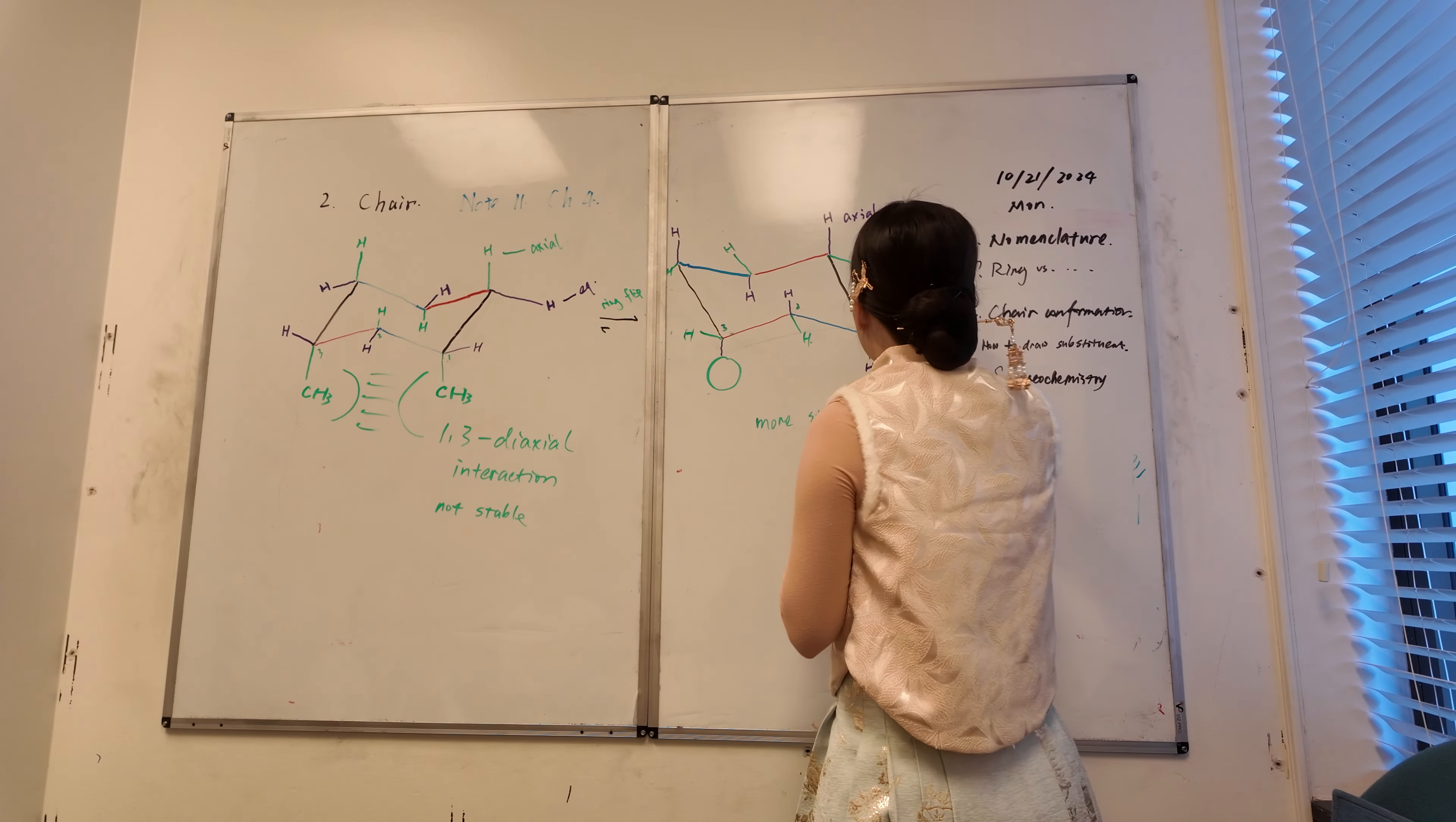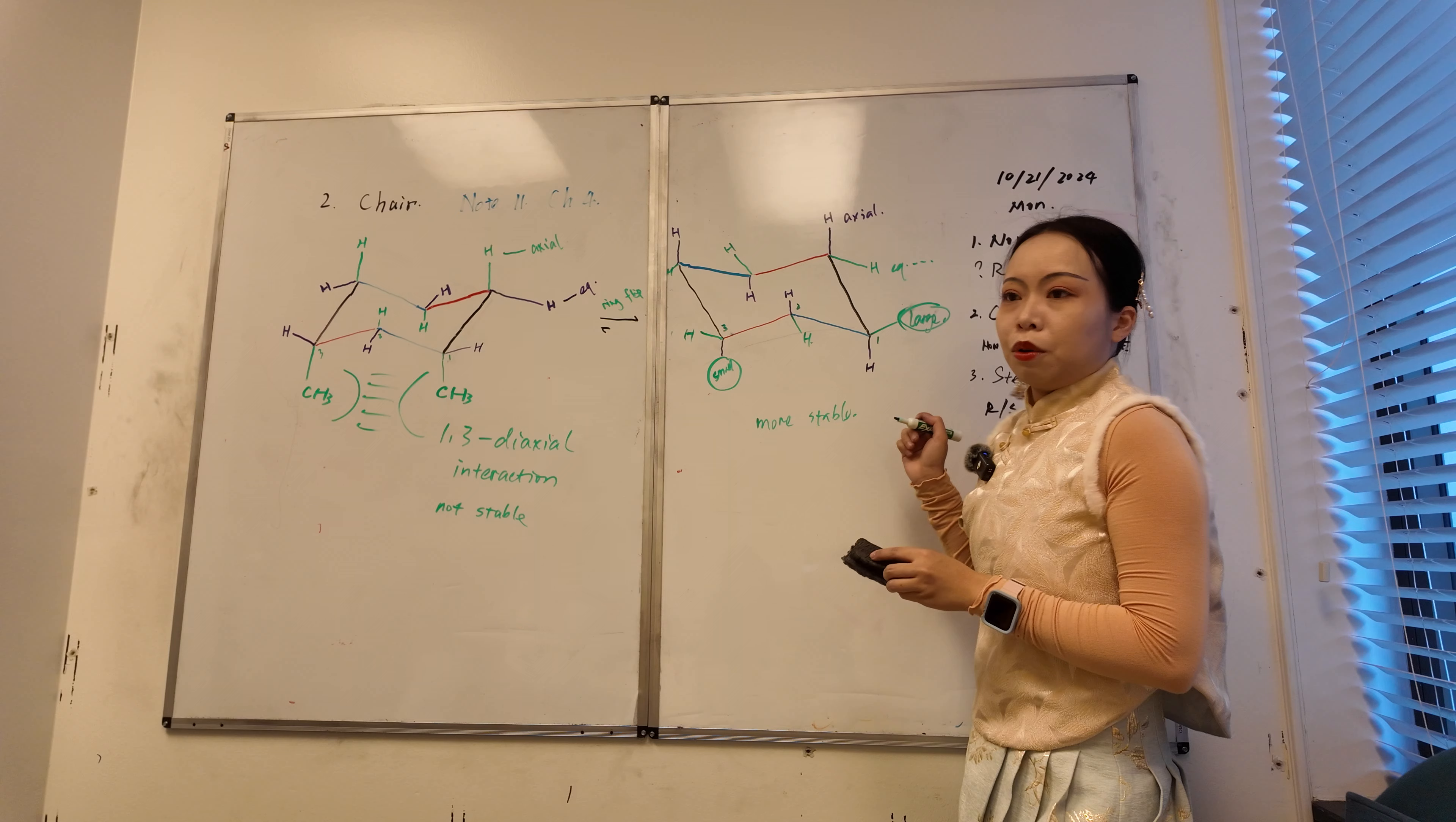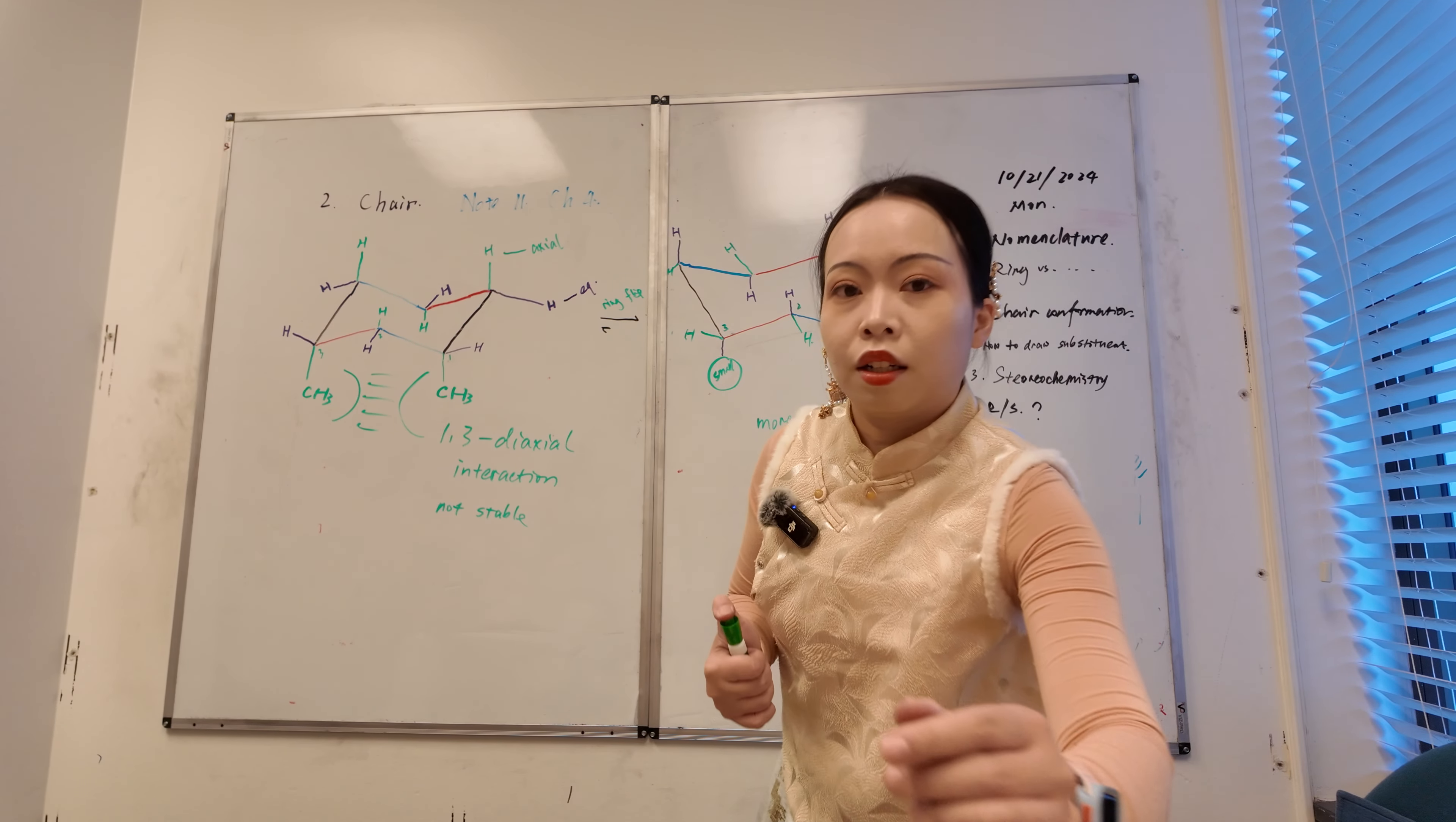You want the large group to be equatorial. You want the small one. So that will be more stable. If you have to have one axial and one equatorial. Then we are, are we good with chair conformation? Thank you.